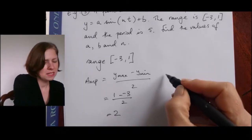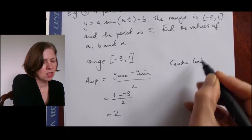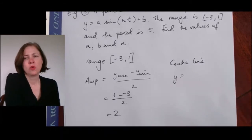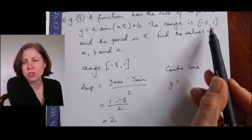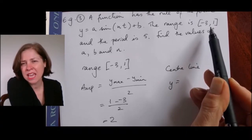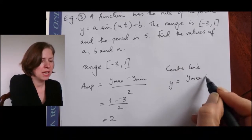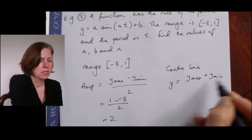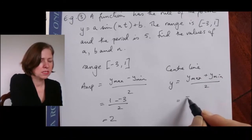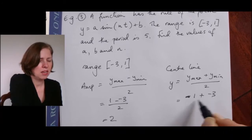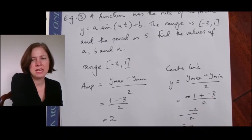But what about the center line? The center line is going to have an equation which I'll find using those two endpoints — I take the average by adding them together and dividing by two. So it's y-max plus y-min divided by two: one plus negative three over two, which is negative two over two, giving me negative one.